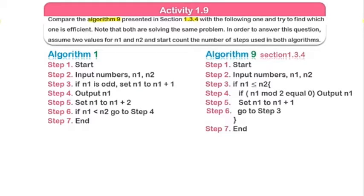We will start by taking input: number n1 and n2. N1 is the starting point — maybe it will start from one — and n2 is five, the last number. So I have assigned one to n1 and five to n2, meaning n2 equals five. You will find out the even numbers from one to five. The steps involved are: first step is start, second step is input number one and five.